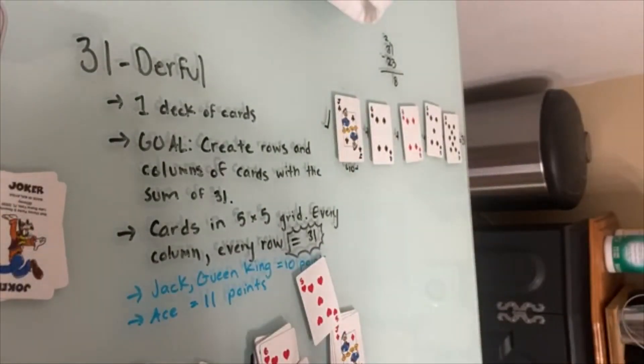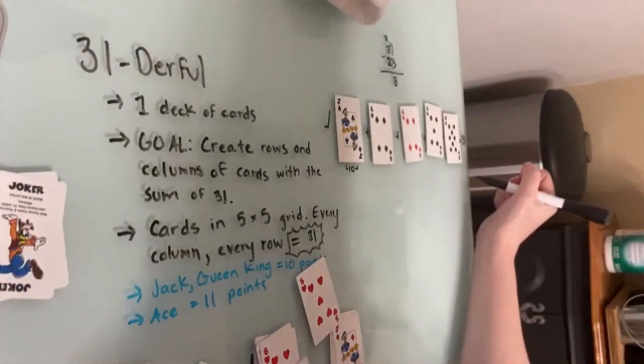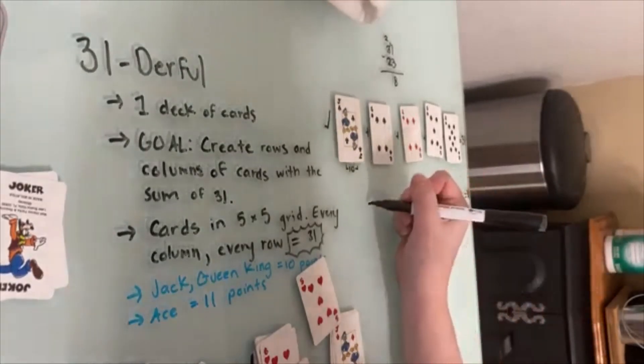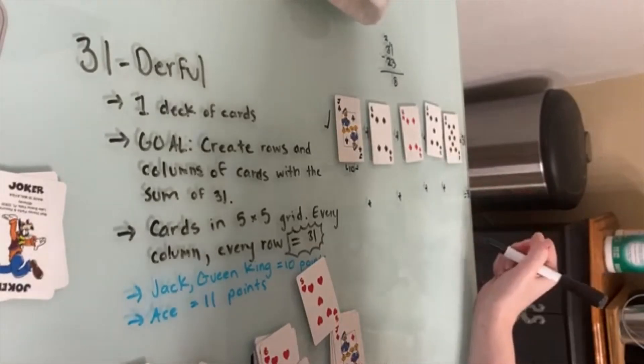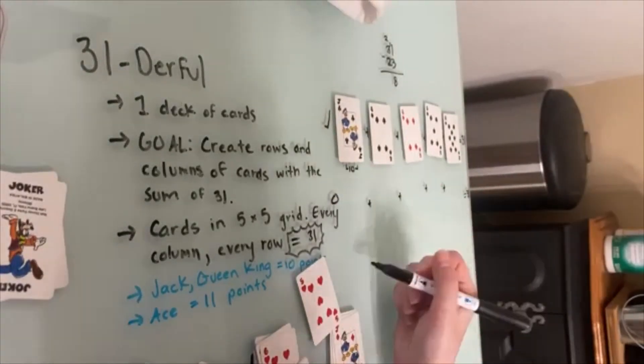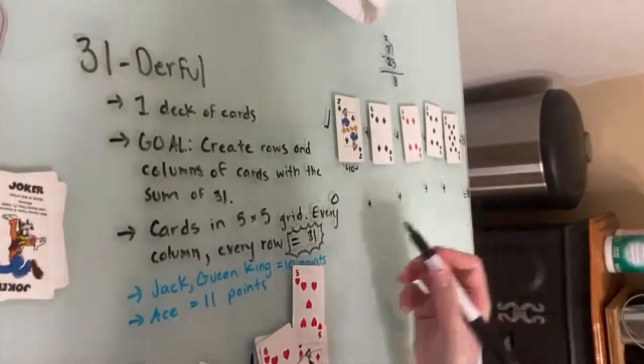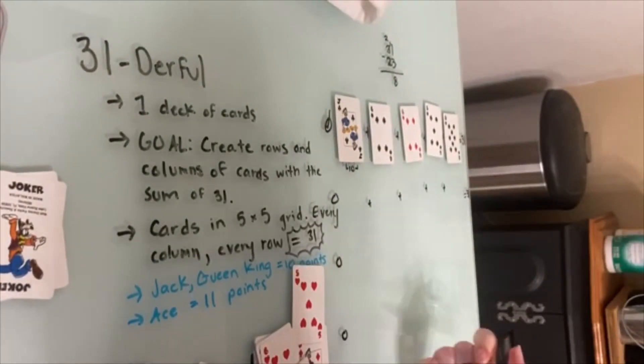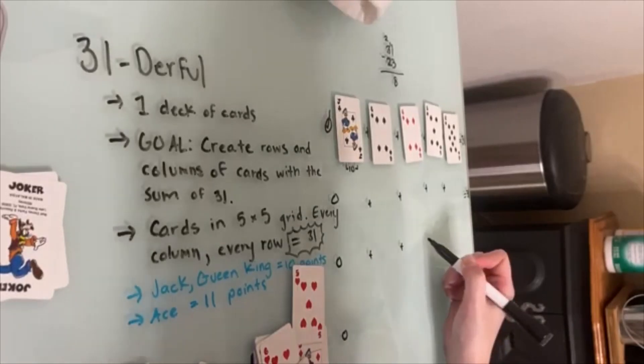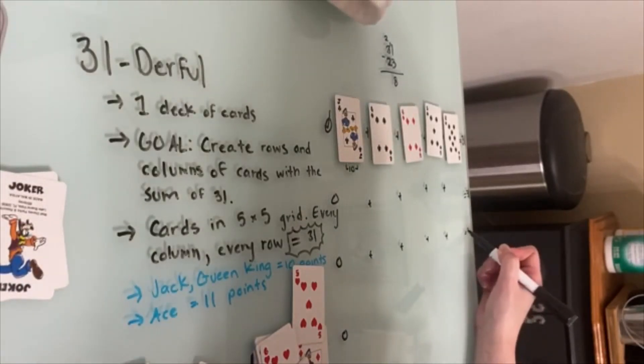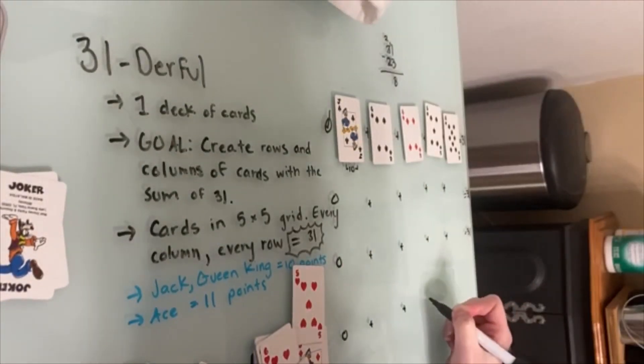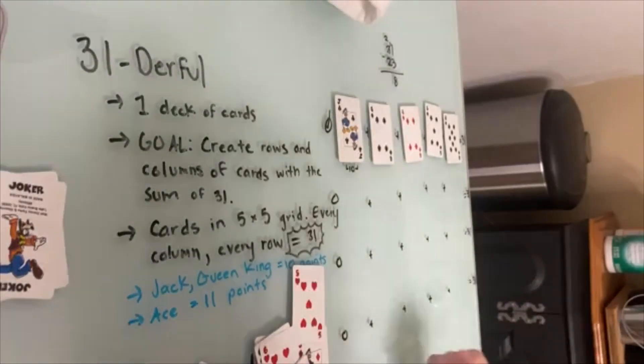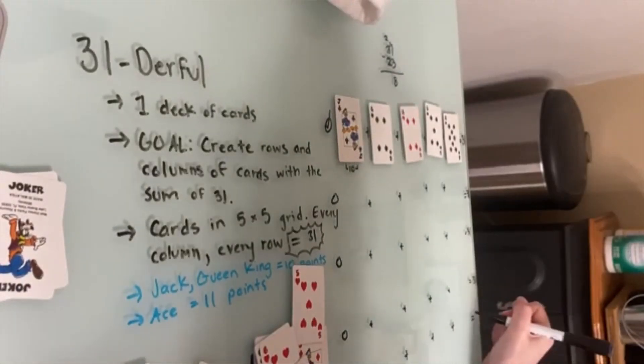Now I need 4 more rows that all equal 31. So this next row equals 31, this next row, so row 2 is equal to 31. The next one, 4 and 5, so these 5 cards are going to equal 31. These 5 cards out of the entire deck need to equal 31, and these 5 cards need to equal 31 also.